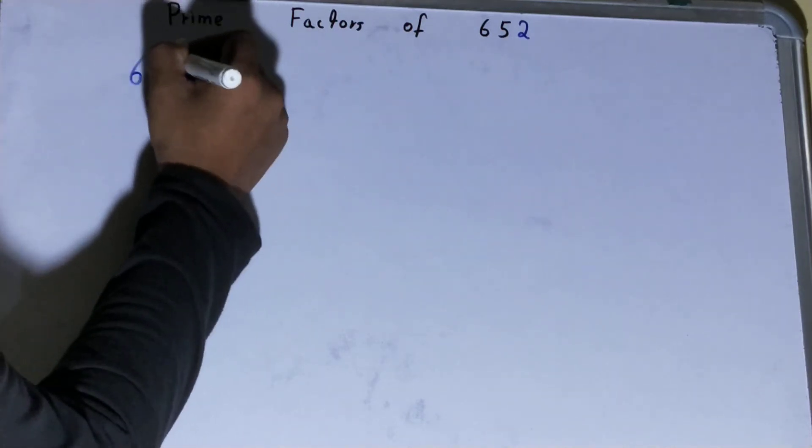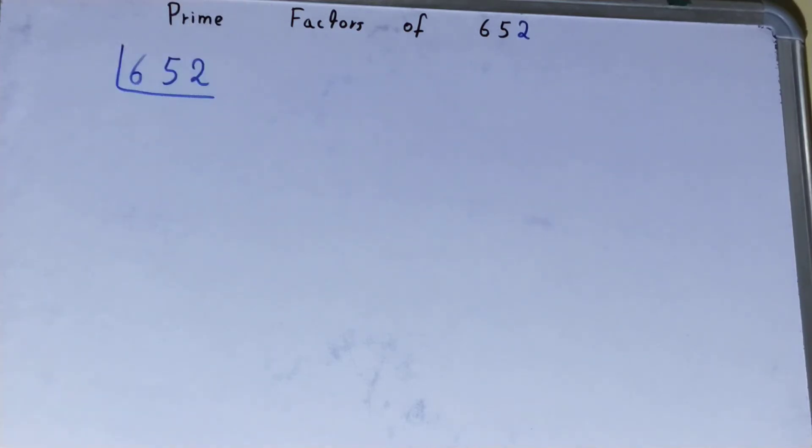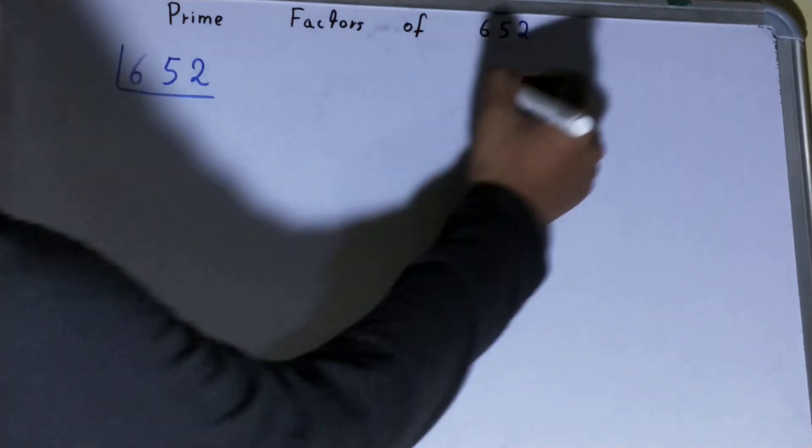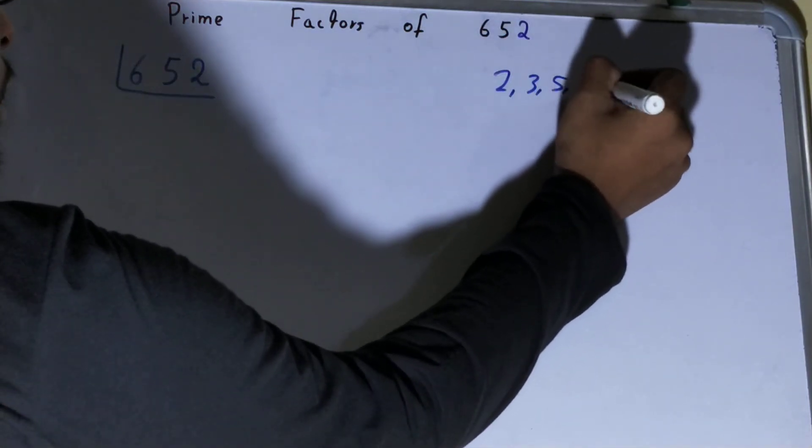To find out the prime factors of the number 652, you need to write the number like this. And before solving this any further, you must have an idea about what prime numbers are. So your prime numbers are numbers that are divisible by 1 and the number itself, like 2, 3, 5, 7, and so on.